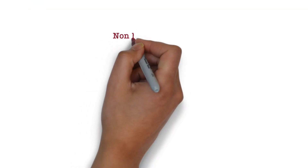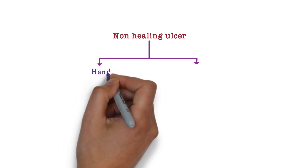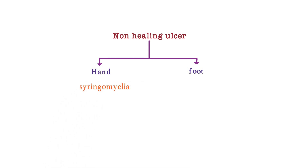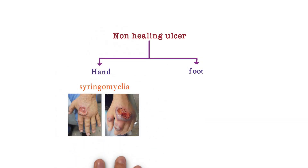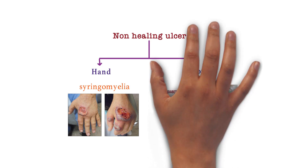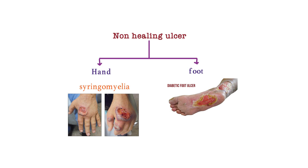If a question mentions a non-healing ulcer, always check whether it is on the foot or the hand. If there is an image of the hand, think for syringomyelia — which develops when cerebrospinal fluid, which usually flows around the outside of your brain and spinal cord, collects inside your spinal cord and forms fluid-filled cysts, which is why it is generally seen in the hands. If there is a non-healing ulcer on the foot, think for diabetic foot — which involves infection, ulceration, or destruction of deep tissue associated with neurological abnormalities and peripheral vascular disease in the lower limb.